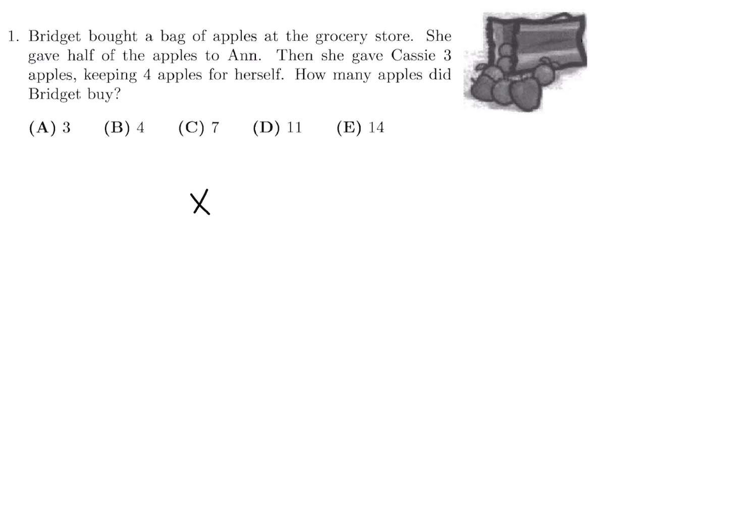Let's say she bought X apples. Then what she does is she gives half of them to Ann, and that means she keeps half. And then from the half that she keeps, she gives three of those to Cassie. So that means she has remaining X over 2 minus 3, and they're saying that this is equal to 4. So now we just have to solve for this. X over 2 is equal to 7, and therefore X is equal to 14. So number 1, the answer is E.